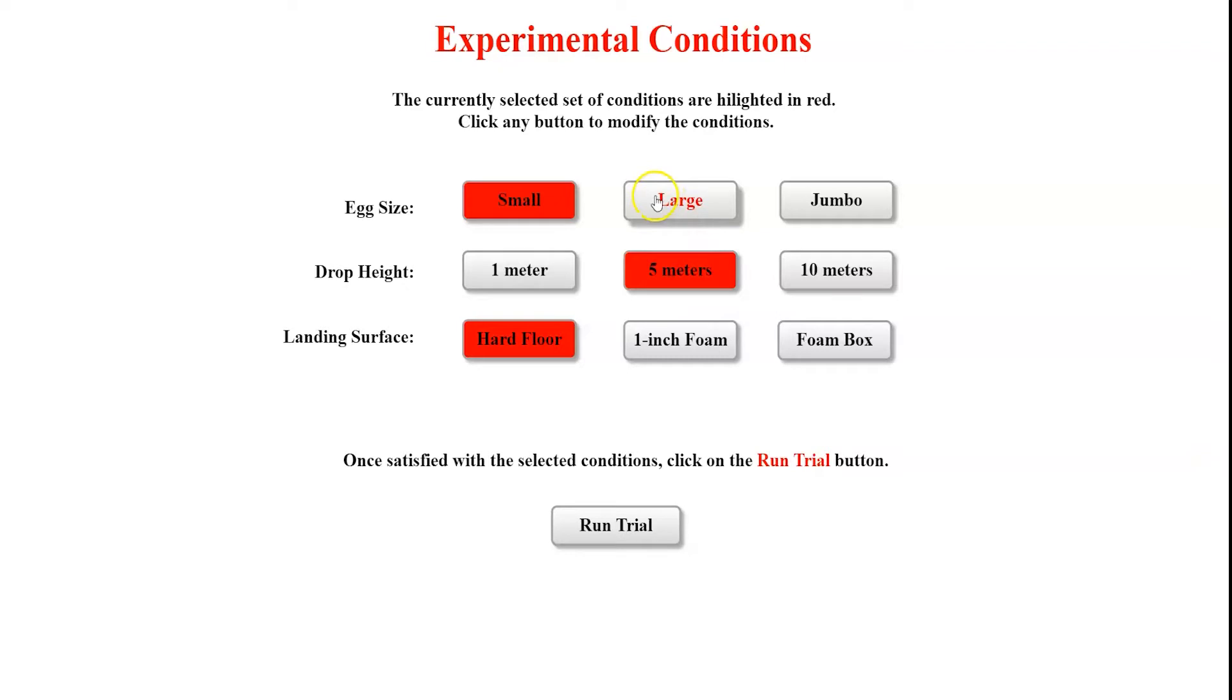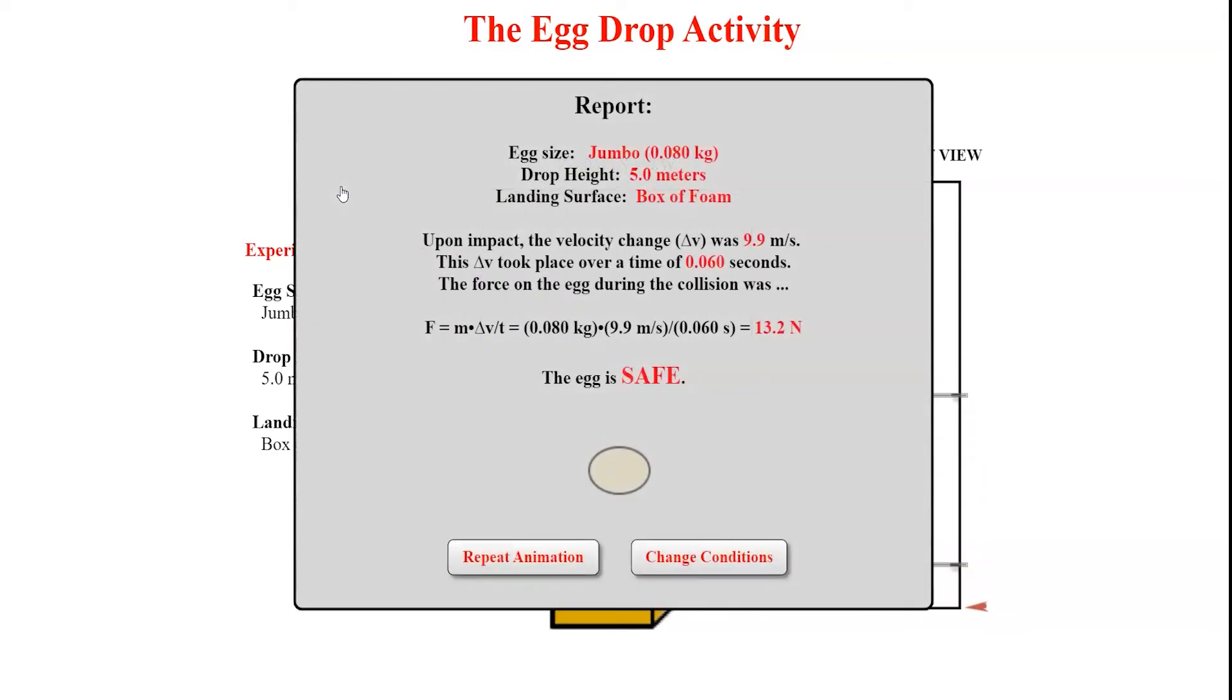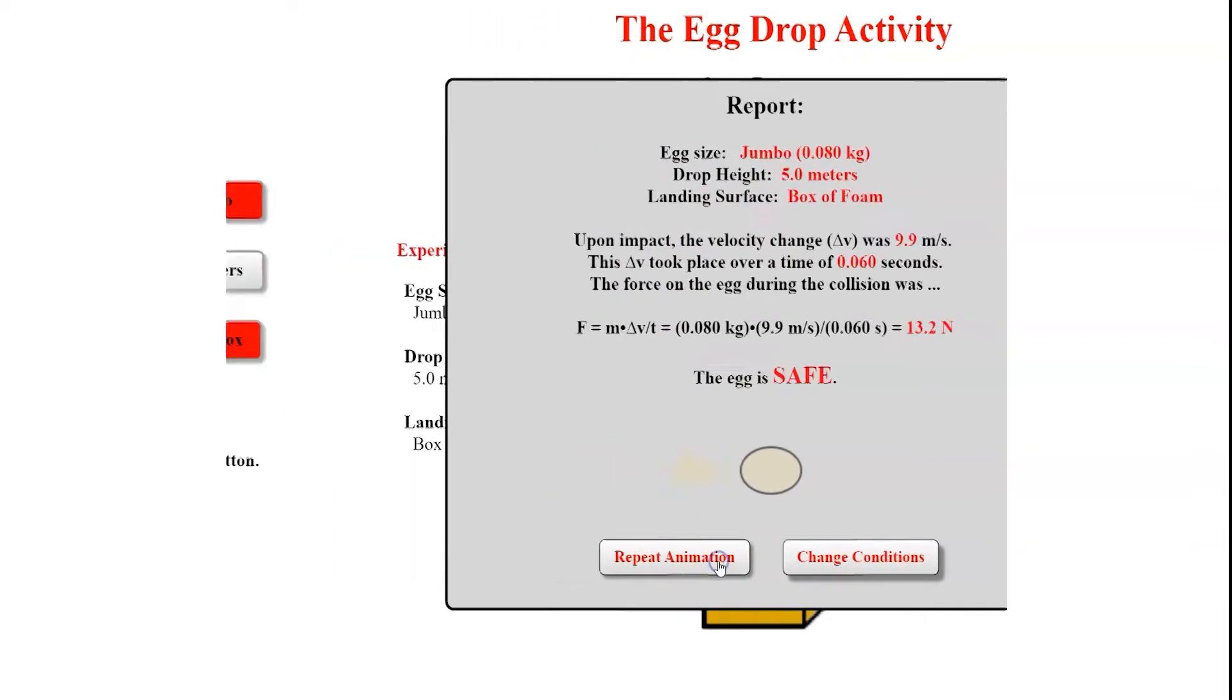One experiment will have you change the mass of the egg. The other will have you manipulate the egg's landing surface or material. When your settings match the lab worksheet, click on Run Trial. Click the Drop Egg button to drop a digital egg from a digital chicken. Once the egg drops, you'll be given pertinent data about the fall and collision to add to your lab worksheet.